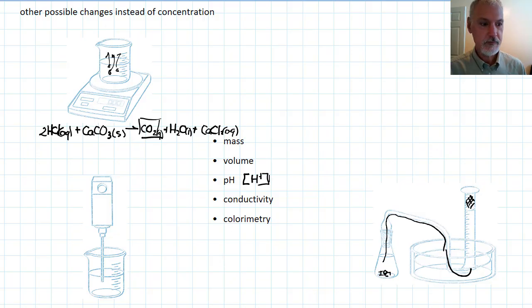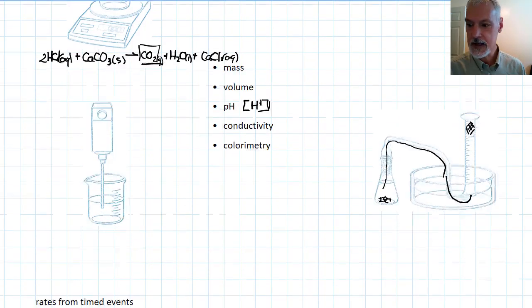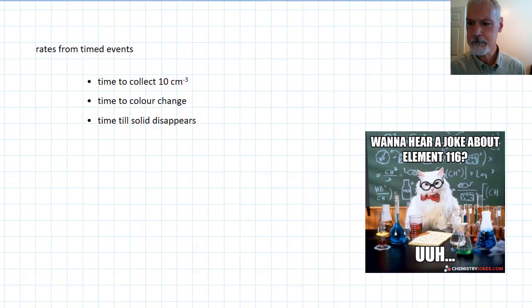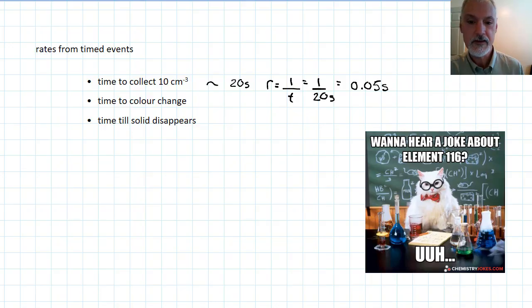The last group of methods to measure rates of reaction I'm going to mention are called timed events. Perhaps you're going to time how long it takes to collect 10 cubic centimeters of gas. And for my example, let's say that that takes 20 seconds. We would then define the rate of the reaction as 1 over the time to get to that event, which in this case would be 1 over 20. The units then for my answer would simply be 0.05 seconds to the minus 1.